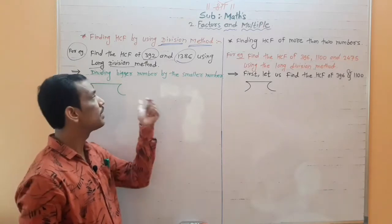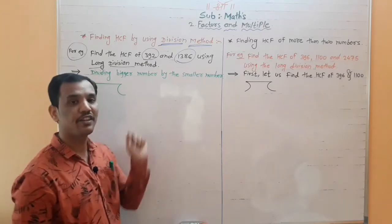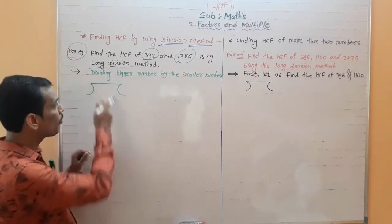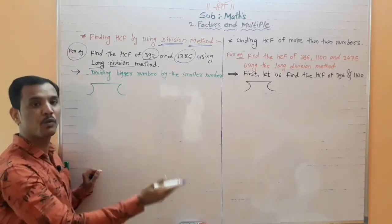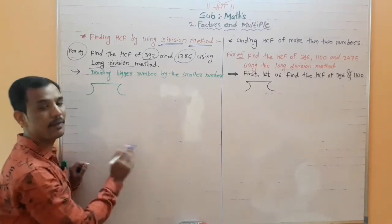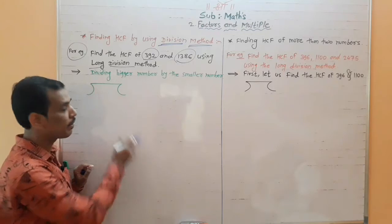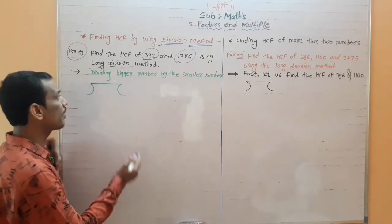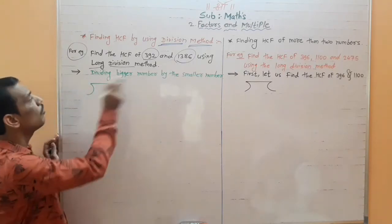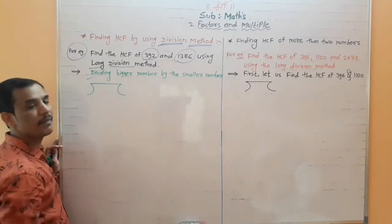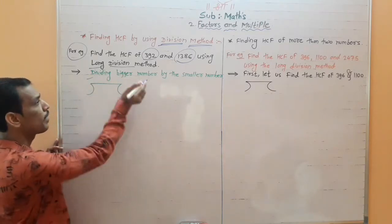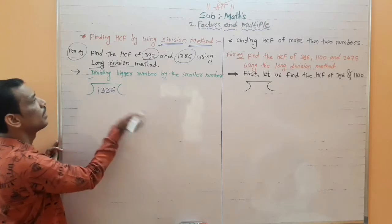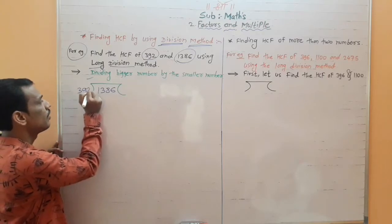Given the number, if you don't get a remainder you should continue. This is the long division method. As per the rule, divide the bigger number by the smaller number. We write the bigger number 1386 and divide by 392.